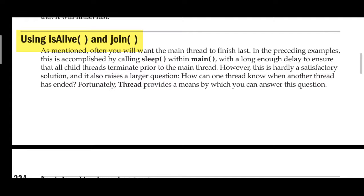The status of one thread should be known to the other, because there may be a parent-child relationship — the child thread should be terminated prior to the main thread. Fortunately, the built-in class Thread (with capital T) provides a means by which you can answer this question, through synchronization or message passing.